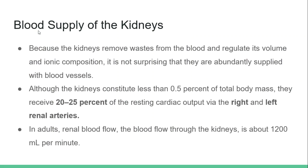Looking at the blood supply to the kidneys: because the kidneys remove waste from the blood and regulate its volume and ionic composition, it is not surprising that they are abundantly supplied with blood vessels. Although the kidneys constitute less than 0.5% of the body mass, they receive 20–25% of the resting cardiac output via the right and left renal arteries. In adults, renal blood flow through the kidney is about 1200 ml per minute.